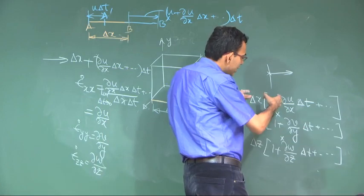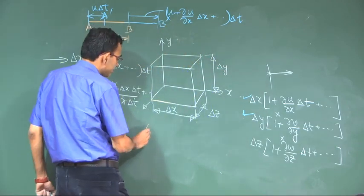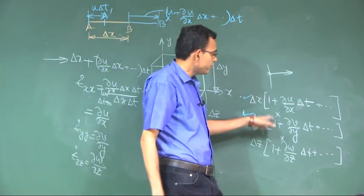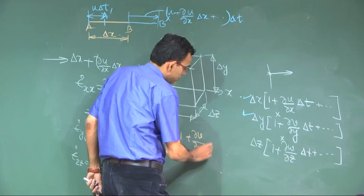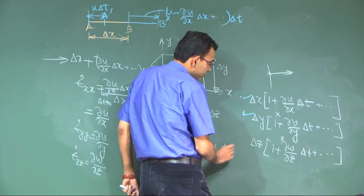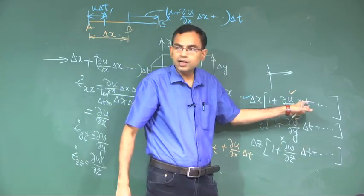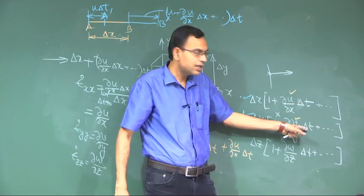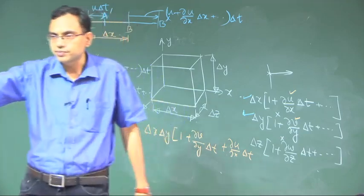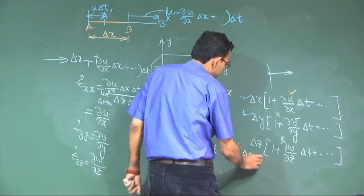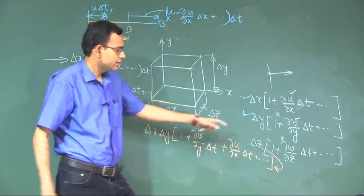We calculate this systematically by first multiplying two terms: delta x times delta y, giving terms involving epsilon x plus the corresponding strain in y, with products of order delta t squared — these higher order terms are neglected. Then we multiply that result by the delta z term.